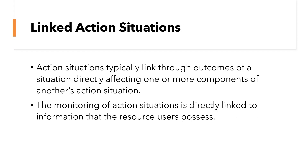Then we move on to linked action situations. These are action situations that are typically linked through outcomes of a situation directly affecting one or more components of another's action situation. The monitoring of an action situation is directly linked to the information that the resource users possess. This is like an example of getting into a car accident — one person who causes the car accident affects another person if they hit another car and that causes more problems in the long run.